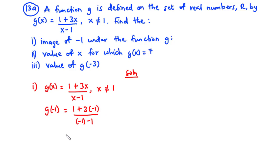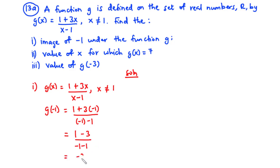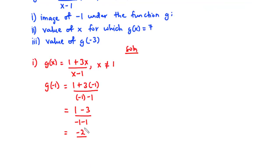So this becomes: 1, and 3 times negative 1 is negative 3, so 1 minus 3 over negative 1 minus 1 is negative 2. So 1 minus 3 is negative 2, over negative 1 minus 1 is negative 2. Negative 2 divided by negative 2 is 1. So g(negative 1) equals 1.